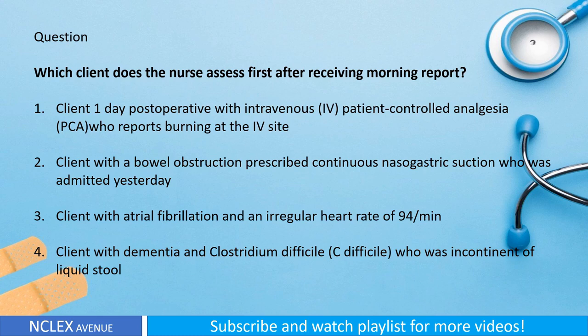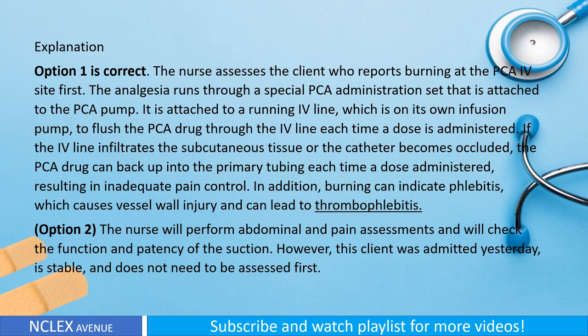Question: Which client does the nurse assess first after receiving morning report? One: client one day post-operative with intravenous patient-controlled analgesia (PCA) who reports burning at the IV site. Two: client with a bowel obstruction prescribed continuous nasogastric suction who was admitted yesterday. Three: client with atrial fibrillation and an irregular heart rate of 94 per minute. Four: client with dementia and Clostridium difficile (C. difficile) who was incontinent of liquid stool.